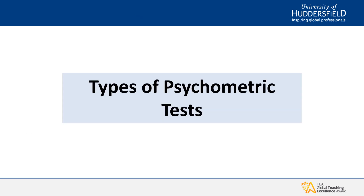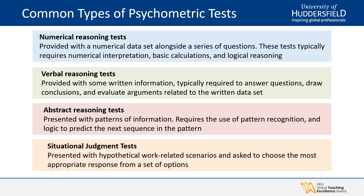The first area we're going to cover is the most common types of psychometric tests currently used in recruitment. Here are the four most common types you may encounter. Firstly, numerical reasoning tests, where you are provided with a numerical data set alongside a series of questions. These questions challenge your understanding of the data set, typically requiring numerical interpretation, basic calculations and logical reasoning.